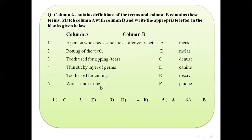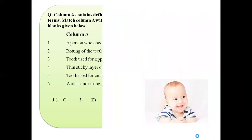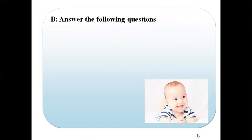Number six: widest and strongest teeth. Which teeth are strongest and widest? Molar. Molars are the widest and strongest teeth, so number six you match with number B. To recap: number one — C, dentist; number two — E, decay; number three — D, canine; number four — F, flat; number five — A, incisor; number six — B, molar.